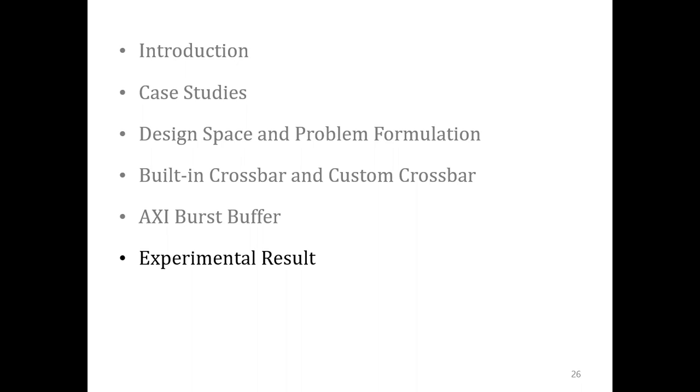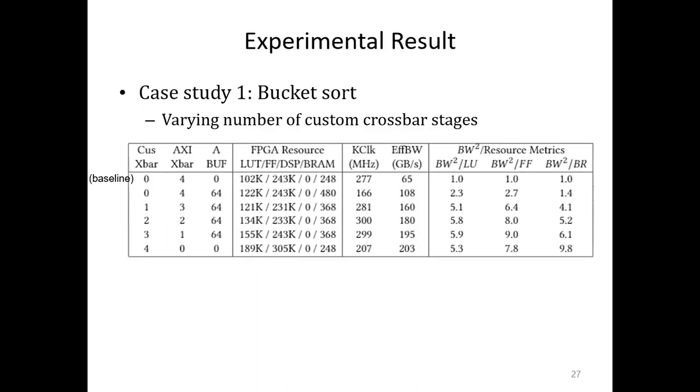I'll present the rest of the experimental result. We have already seen the effect of enlarging the HLS virtual buffer size, so here we'll see what happens when we change the number of custom crossbar stages. We fix the HLS virtual buffer size to 64 for clear comparison.